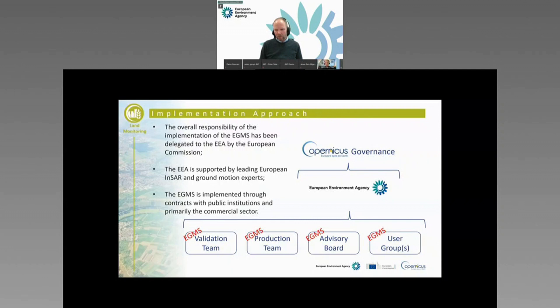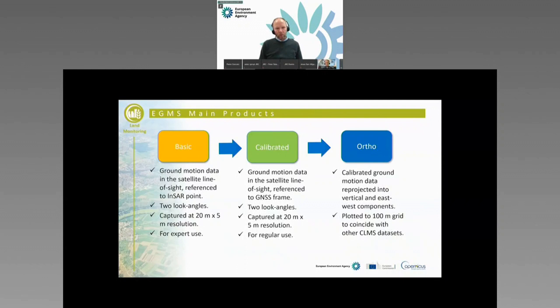In terms of products, we have three different ones: basic, calibrated, and ortho. What you would use most of the time would be the calibrated one — ground motion data, satellite line of sight, but referenced to the GNSS frame. It's full-resolution Sentinel-1. A more easily accessible and understandable product would be the ortho product, which is a reprojection of the calibrated data into an east-west component and a vertical component. This is easier to understand, but you have to accept a resolution of 100 meters.